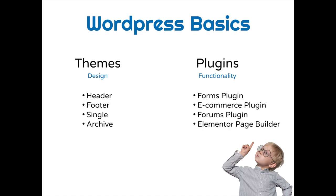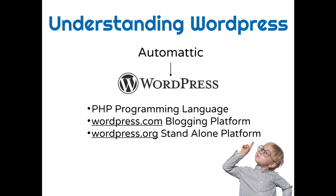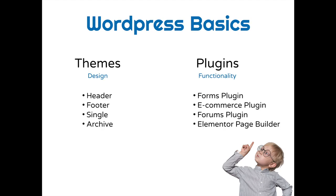We are almost at the end of the first lesson. We talked about WordPress.com, which is a closed blogging platform and is not what we need to use in order to build an independent website. To build our own website, we will use the standalone version of WordPress, which is under WordPress.org. We also talked about WordPress themes, which are in charge of the visual side of our website — the header at the top, where we usually put our logo and navigation bar, and the footer at the bottom, which is shown throughout all the pages of the website.